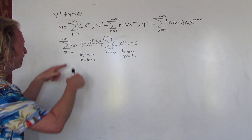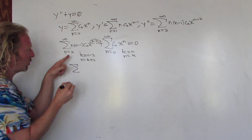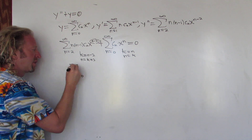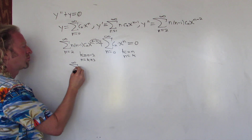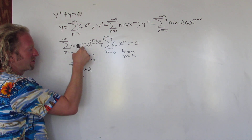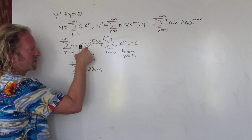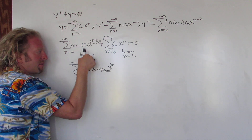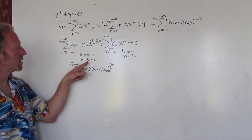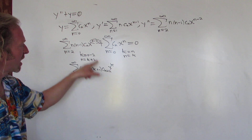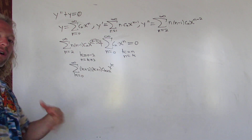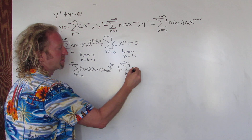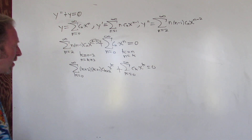Now let's rewrite everything in terms of k. When n is 2, k equals 2 minus 2, so k starts at 0, going to infinity. Replace n with k plus 2: n times n minus 1 becomes k plus 2 times k plus 1, c sub k plus 2, x to the k — since n minus 2 is k. For the second sum, we're just replacing n's with k's: plus the infinite sum from k equals 0 to infinity of c sub k times x to the k, equal to 0.